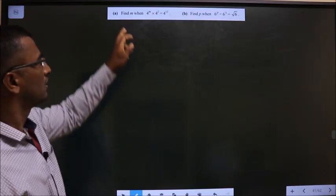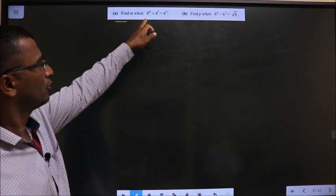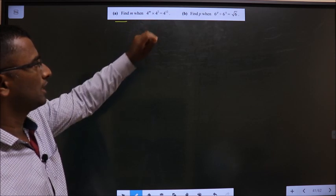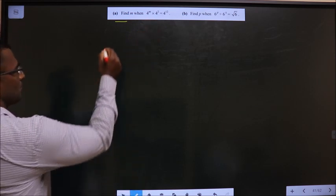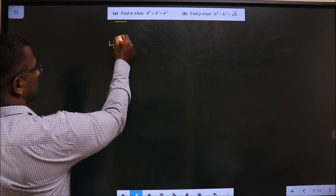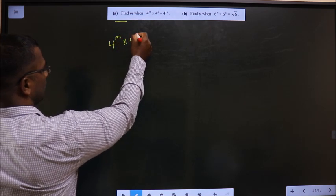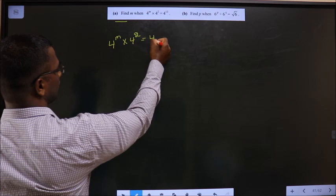The first problem: find m when 4^m × 4^2 = 4^12. The given equation is 4^m × 4^2 = 4^12.